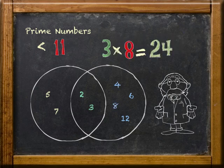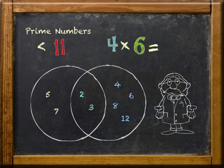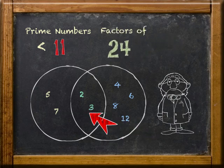But 3 times 8 will give us 24. That leaves 4 times 6. Guess what? That gives us another 24. So far, all the numbers in the right circle and the shared intersection are all factors of 24.